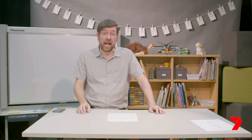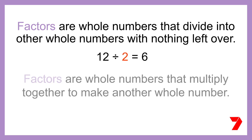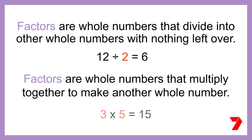Factors are whole numbers that divide into other whole numbers with nothing left over. For example, 2 can be divided into 12 evenly to get an answer of 6, so 2 and 6 are factors of 12. We can also say that factors are whole numbers that multiply together to make another whole number. For example, 3 times 5 is 15, so 3 and 5 are factors of 15.